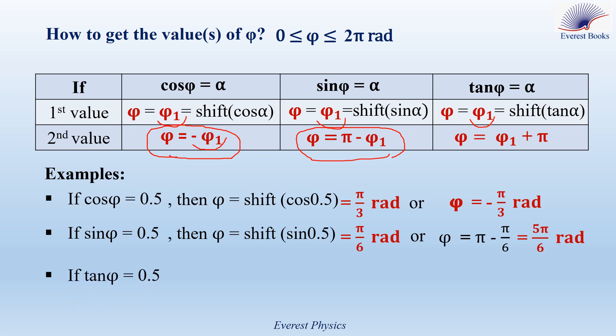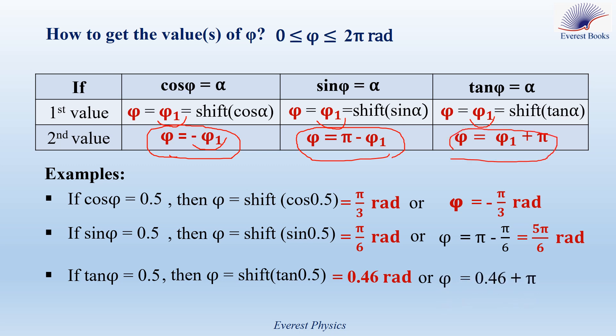If tangent phi equals 0.5, then the first value of phi is given by shift tangent 0.5, which the calculator gives as 0.46 radians. The second value of phi is given by phi1 plus pi, or 0.46 plus pi, which is equal to 3.6 radians.